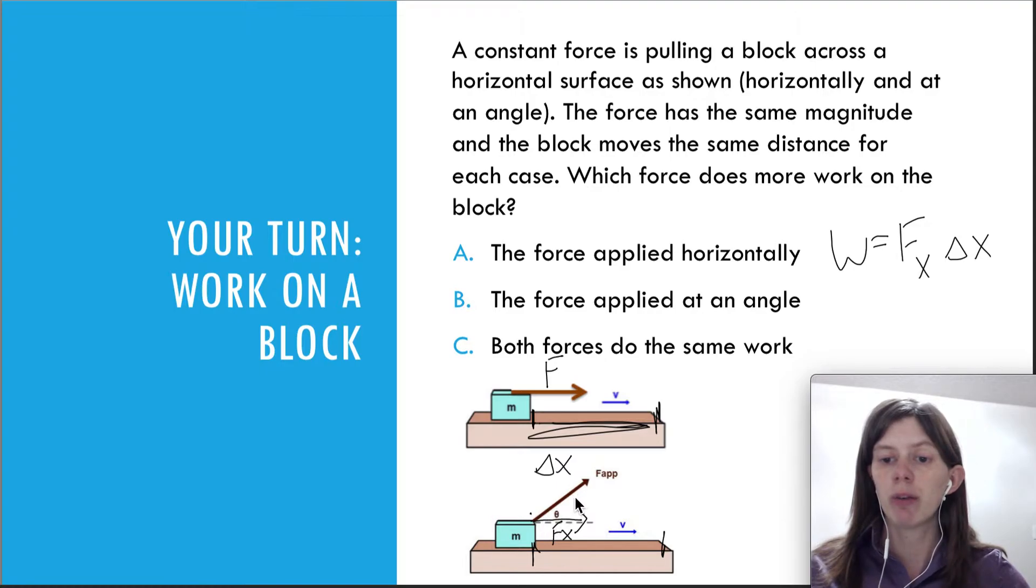And we know from our work on the vectors that the component of a force is always going to be smaller than the force itself, because the force is the hypotenuse and the component is just one of the sides. So that means that actually the force applied horizontally is going to do more work because the work done here is f times delta x. While in the second case, the work is fx times delta x and fx is smaller than f.